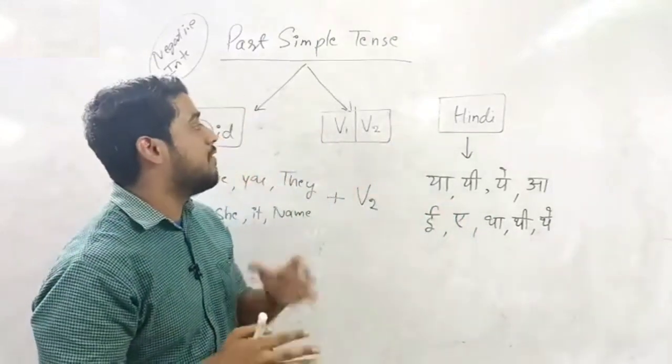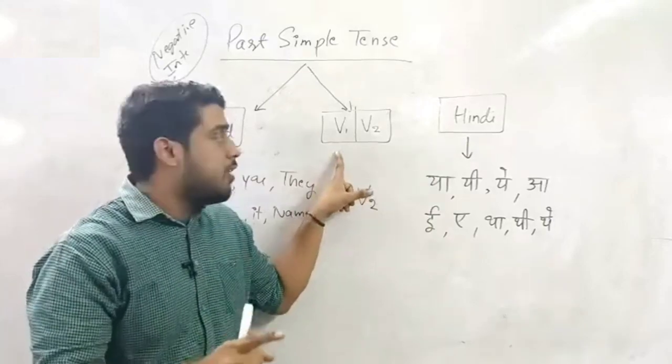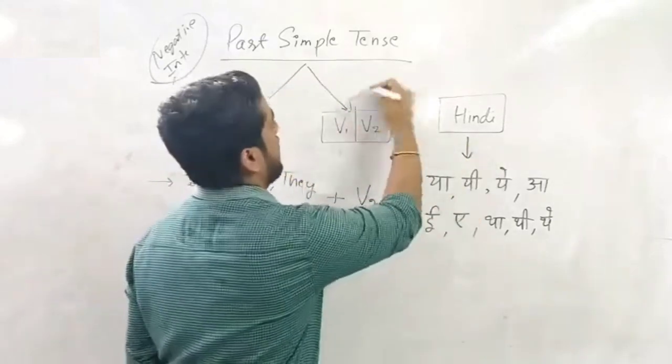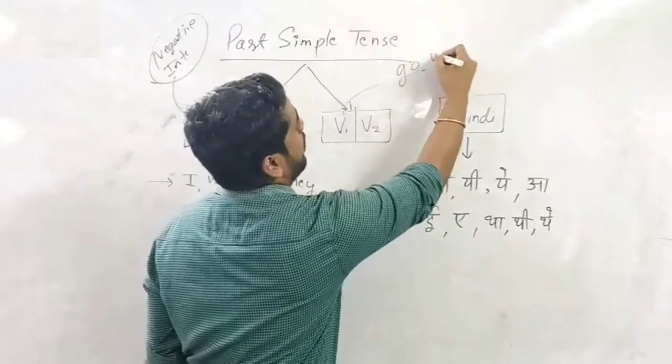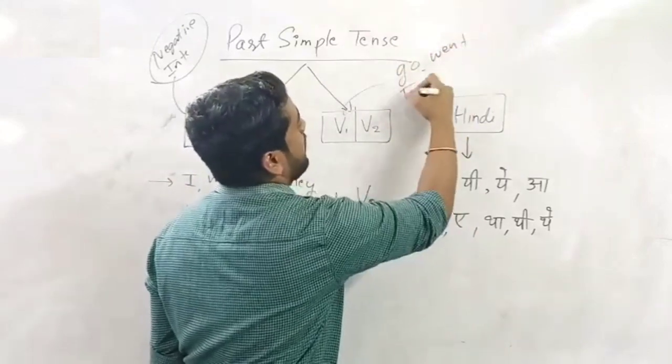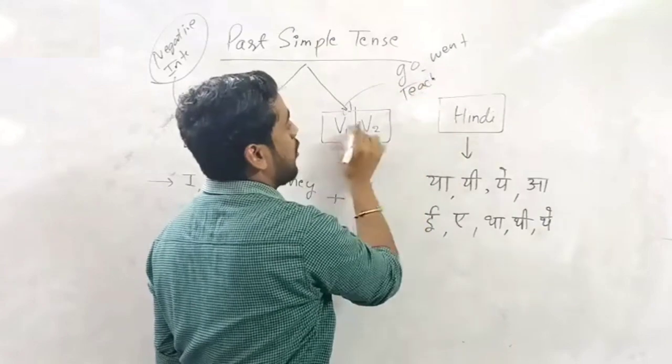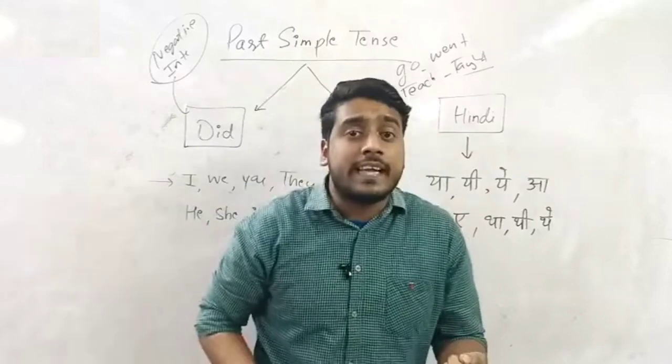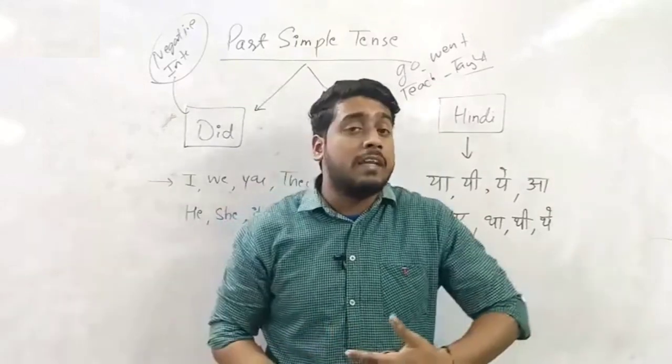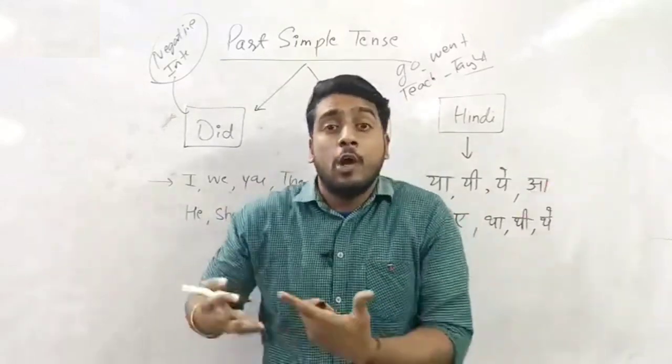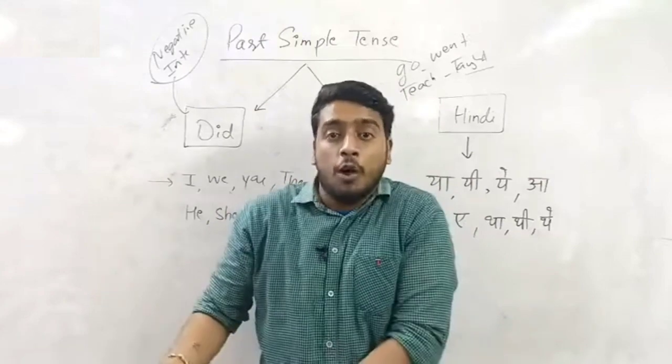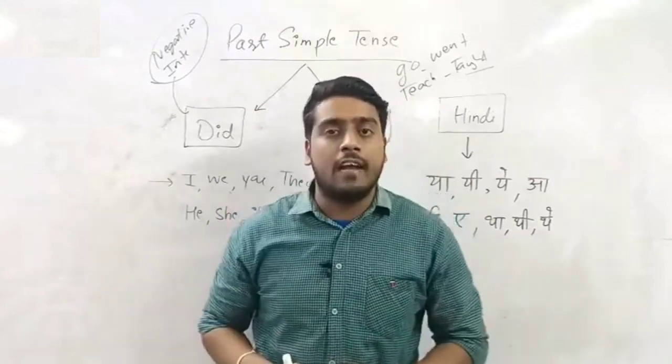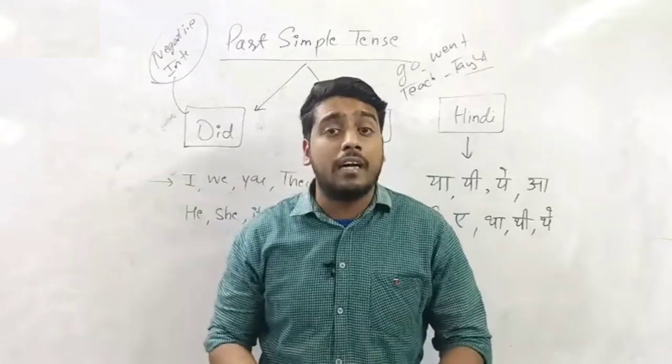If we talk about the main verb, which is first form of the main verb and second form of the main verb. Example: first form can be go, second form would be went. Example can be teach, second form would be taught. Example can be fight, second form would be fought. Example can be look, second form would be looked. Watch - watched. Play - played.